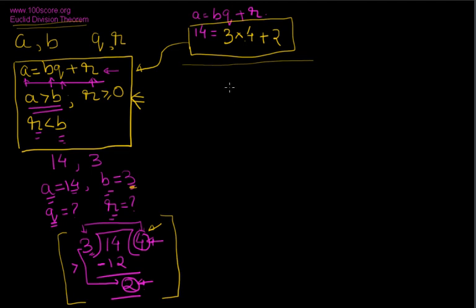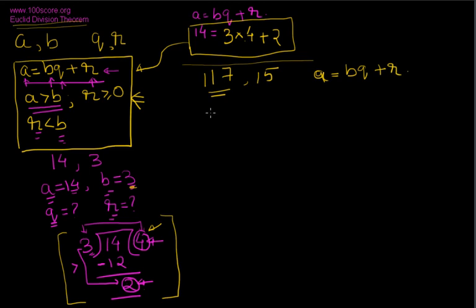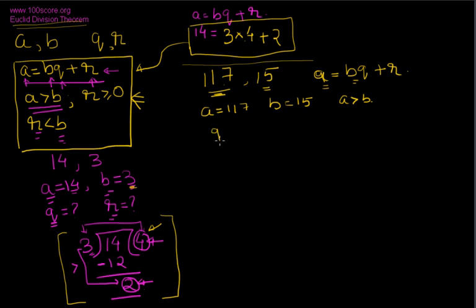Let's take a bigger example: 117 and 15. First, write down the equation — we need to represent A in terms of B times Q plus R. Identify A and B: since 117 is greater than 15, A is 117 and B is 15. Now we need to find Q and R using division.